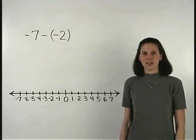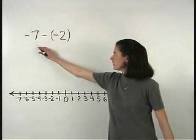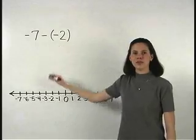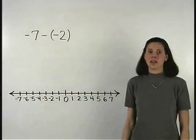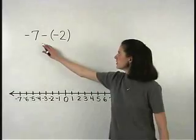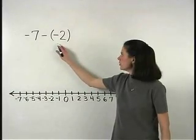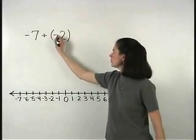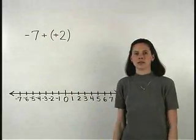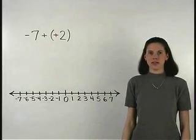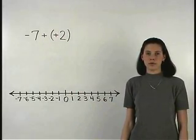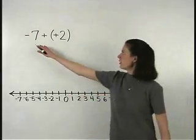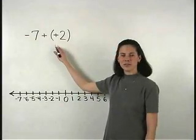To subtract the integers negative 7 minus negative 2, it's important to understand that when we have minus a negative, we can change it to plus a positive. So negative 7 minus negative 2 becomes negative 7 plus positive 2.